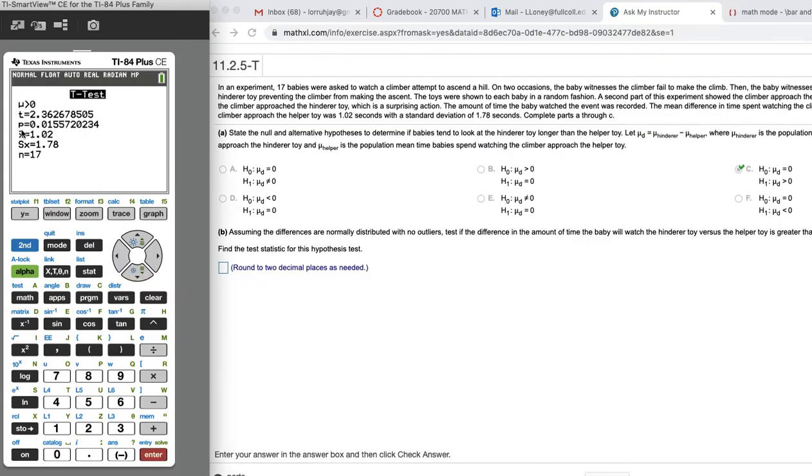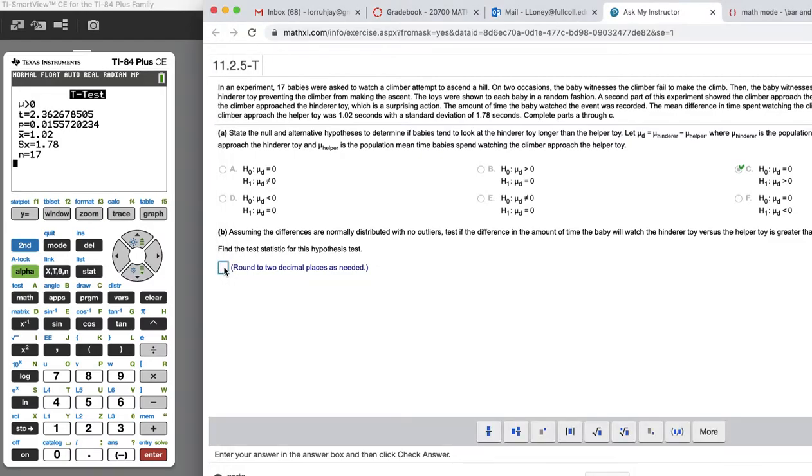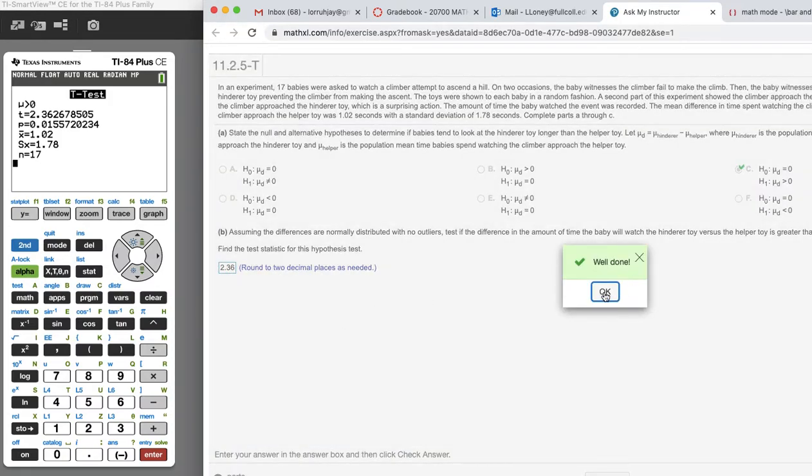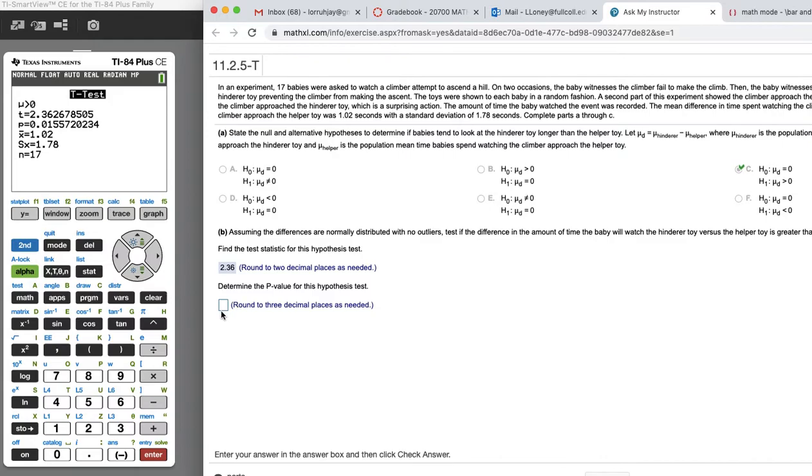So here's the p-value here. The question is asking for the test statistic. That's the top thing. So let's type that in. Two decimal places, so 2.36. Looks good. The p-value is the next number down. Three decimal places, 0.016.